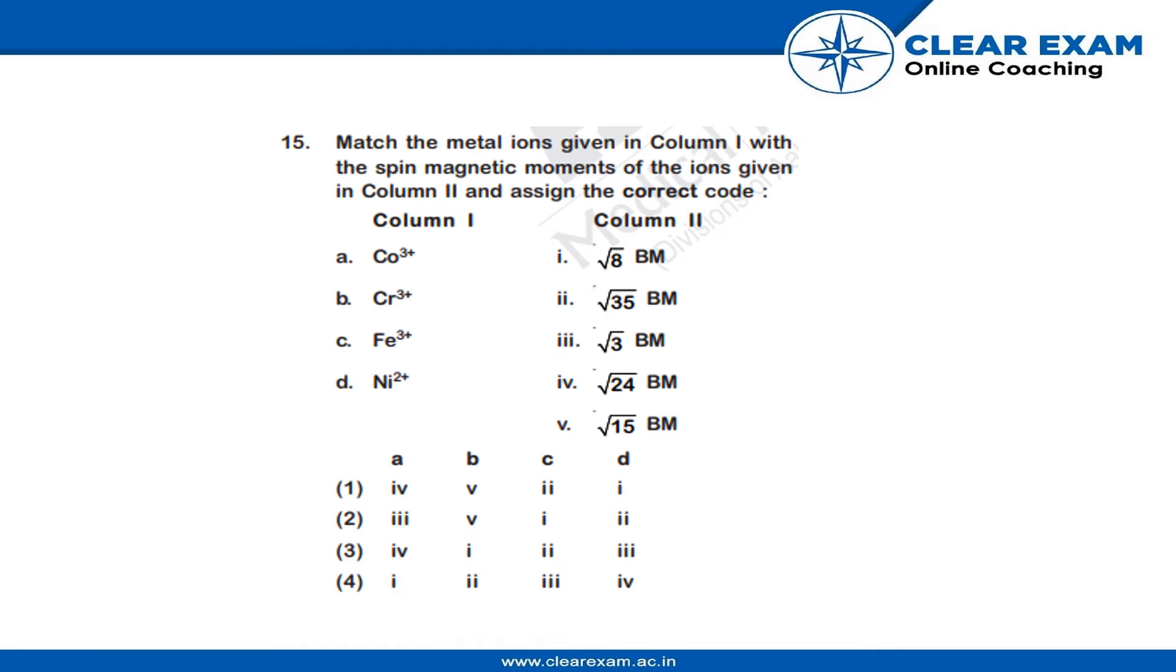We will have to calculate the spin magnetic moments using the formula √(n(n+2)), where n signifies the number of unpaired electrons. Let us have a look at the solution.